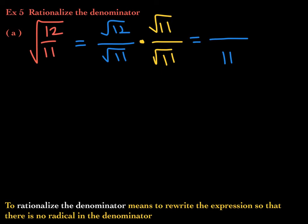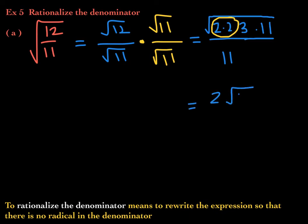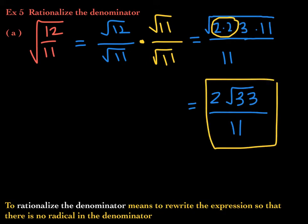All you have to do now is simplify the numerator using prime factorization. 12 is 2 times 2 times 3, and 11 is just 11. The index is 2, so I circle the pair of 2s, giving me 4, and the square root of 4 is 2. What remains inside is the square root of 3 times 11, which is 33, all over 11. This expression is simplified because the denominator no longer has a radical.